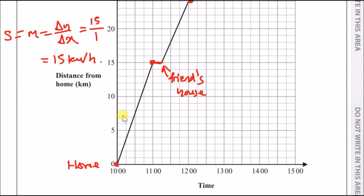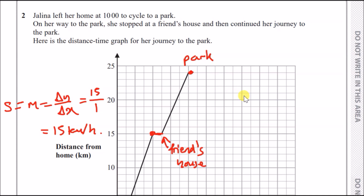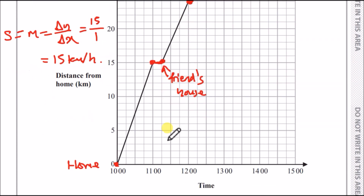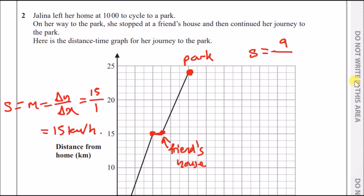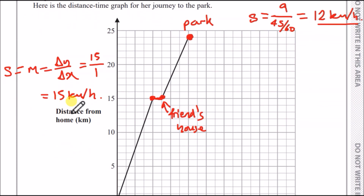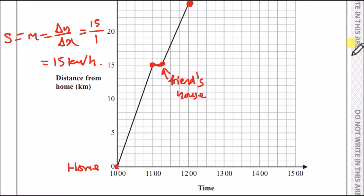From her friend's house to the park: she traveled from 15 km up to 24 km, so 9 km. The time was from 11:15 to 12:00, which is 45 minutes, or 45 over 60 hours. Dividing 9 by that fraction gives 12 kilometers per hour. So she rode faster between home and her friend's house at 15 km/h, versus 12 km/h on the second stretch.